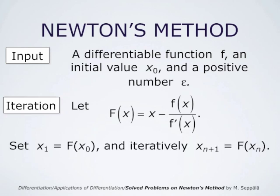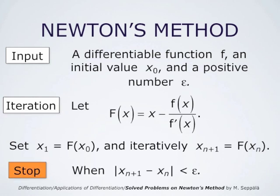Then we set x1 to be capital F at x0, x2 is capital F at x1, and so forth. So x_{n+1} is always capital F evaluated at x_n. We stop this iteration when the points x_n do not move very much anymore — specifically, when the absolute value of x_{n+1} minus x_n is less than epsilon.